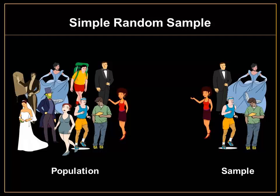First, we have a simple random sample. With a simple random sample, subjects are simply randomly selected from the population. You can think of it as placing names in a hat and then randomly selecting subjects. The names of individuals or subjects from the population are placed in a hat, and then to select your sample, you simply randomly select subjects from your hat, and they'll be a part of the sample.